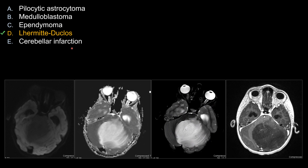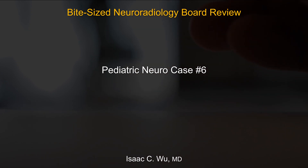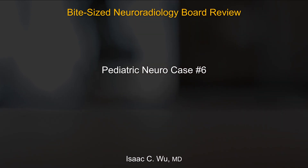For the choice of cerebellar infarction, this is obviously not acute infarction because you don't see restricted diffusion. If you argue it is a subacute or chronic infarction with T2 shine-through, you would not expect this much mass effect. For chronic infarction, you should see involution or volume loss. So clearly, cerebellar infarction does not make sense here. Overall, Lhermitte-Duclos is the best answer for this case. That's all for pediatric neuro case number 6 — thank you for your attention and good luck on your board exam.